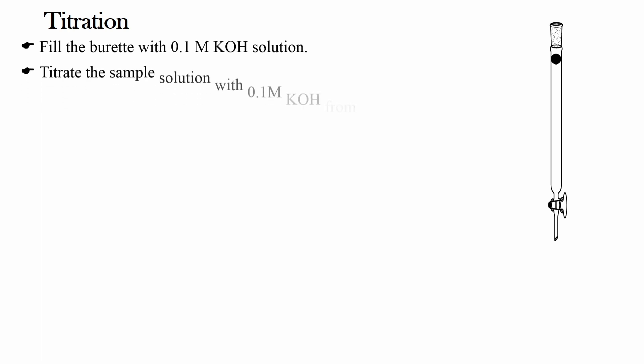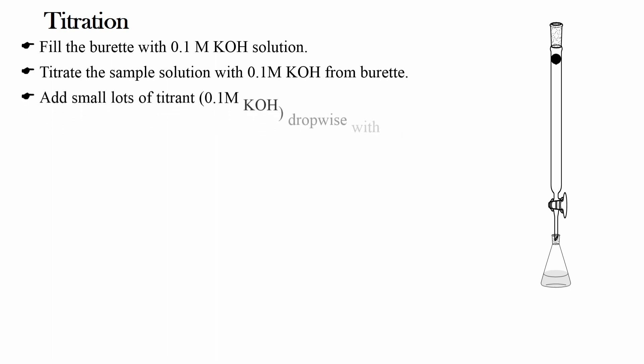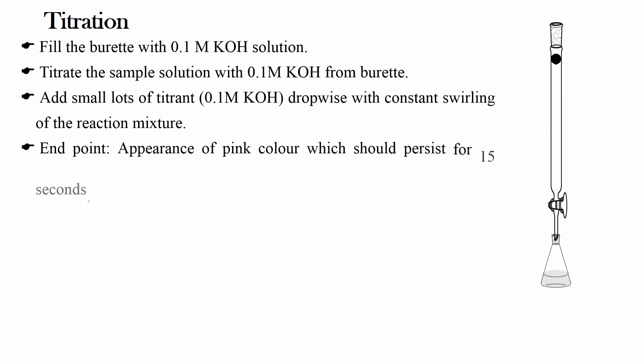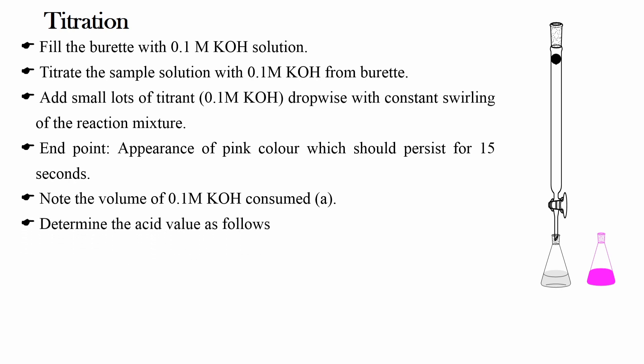Now coming to titration. Fill the burette with 0.1 molar potassium hydroxide solution. Titrate the sample solution with 0.1 molar potassium hydroxide from burette. Add small lots of titrant drop by drop with constant mixing of the reaction mixture. The end point here is appearance of pink color which should persist for 15 seconds. Note the volume of 0.1 molar potassium hydroxide consumed as A and determine the acid value from the formula.